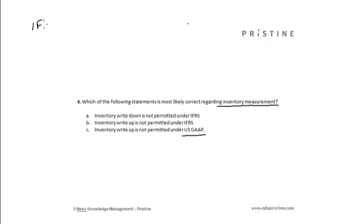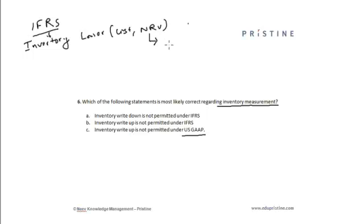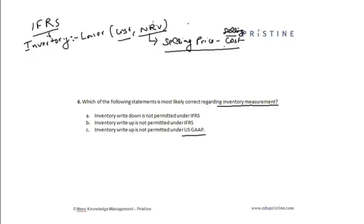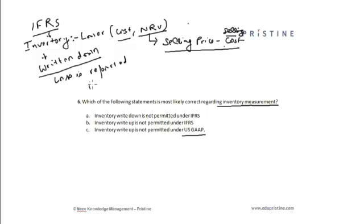Under IFRS, inventory is reported as the lower of cost or net realizable value. Net realizable value is the selling price minus the costs associated with selling the inventory. If the net realizable value is lower than cost, the inventory has to be written down.